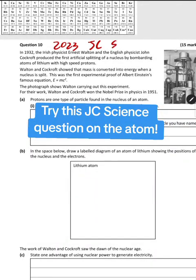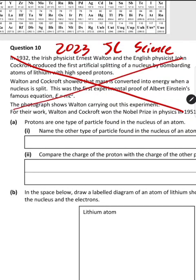This is question 10 of the 2023 Junior Certificate Science paper. It is mainly based on the atom. This opening paragraph about Einstein is unnecessary, but it is good practice to read it in the short questions.